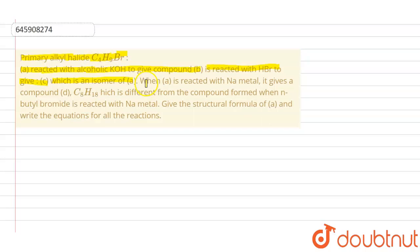That is already hidden. When A is reacting with sodium metal, it gives a compound C8H18 which is different from the compound when n-butyl bromide is treated with sodium metal.